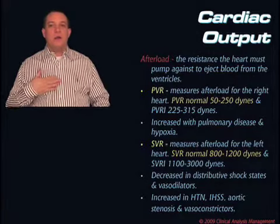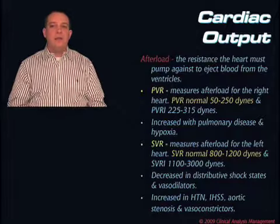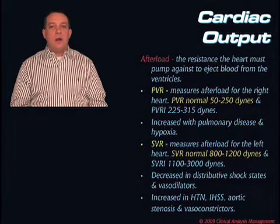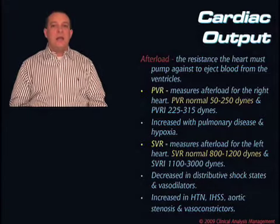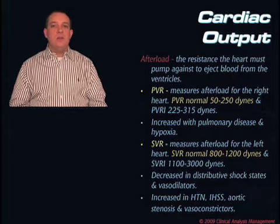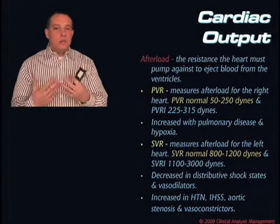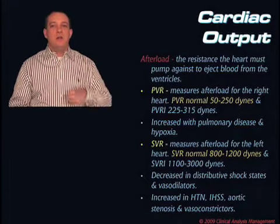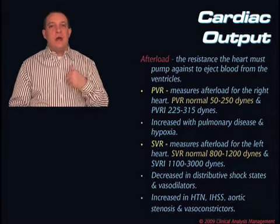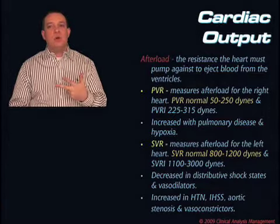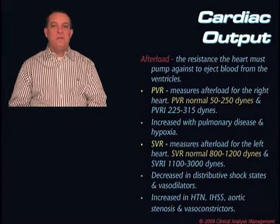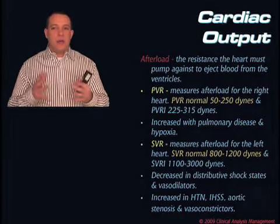Just like we have afterload for the right side, we have afterload for the left side — that's the systemic vascular resistance, or SVR, also measured in dynes. A normal SVR is somewhere around 800 to 1200 dynes. You need to know what a normal PVR is and what a normal SVR is, because on exam scenarios they're typically not going to give you a normal set of values — you need to recognize abnormalities. You also need to know normal cardiac output, cardiac index, CVP, and wedge.